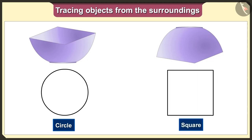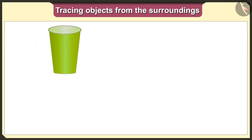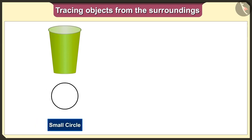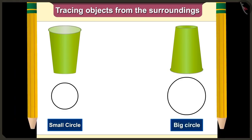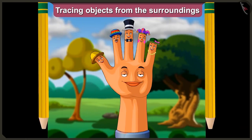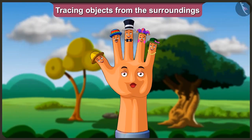So if we keep the bowl straight and trace it, we get a circle shape, and if we keep it upside down and trace it, we get a square shape. If we keep the glass straight and trace it, we get a small circle shape, and if we keep it upside down and trace it, we get a bigger circle.